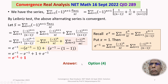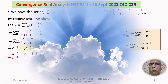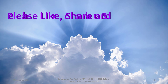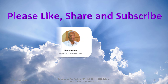So the series converges and its sum is e^(-1) + 1. This corresponds to Option 4: it converges to e^(-1) + 1. That is the detailed discussion of the solution of the problem, based on the concepts of series convergence. I am sure you have understood the solution. I wish you all the best. Thank you.